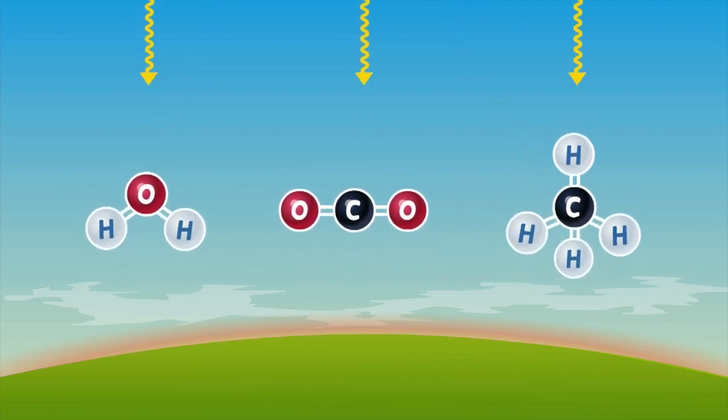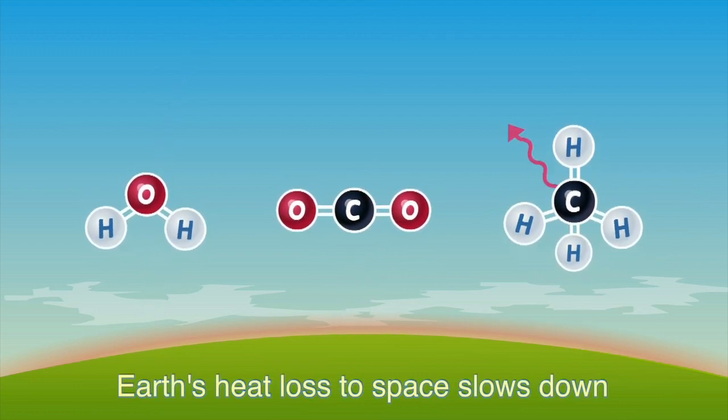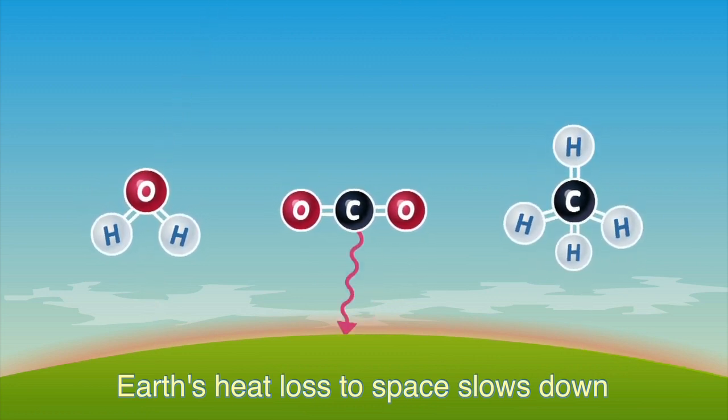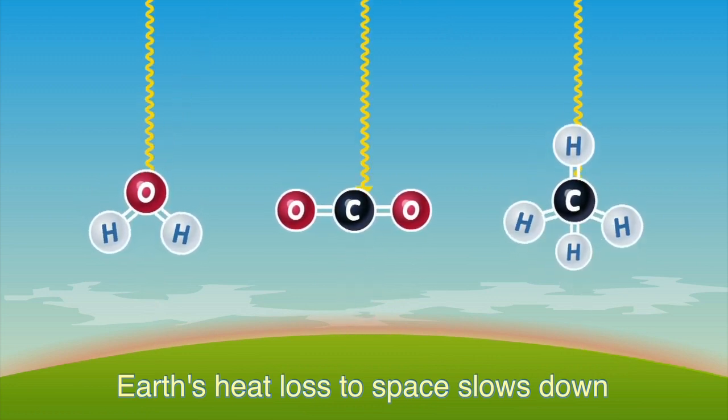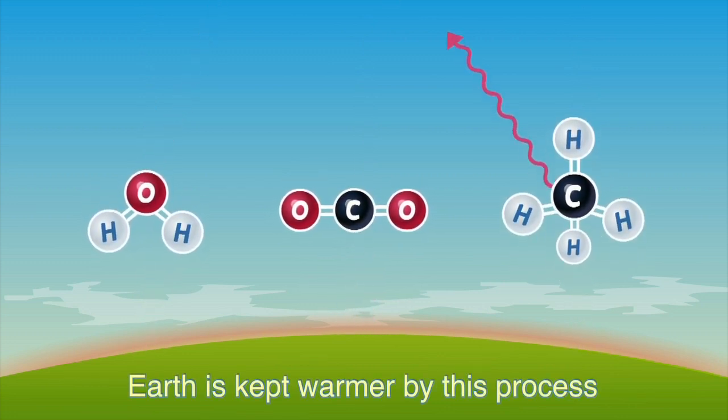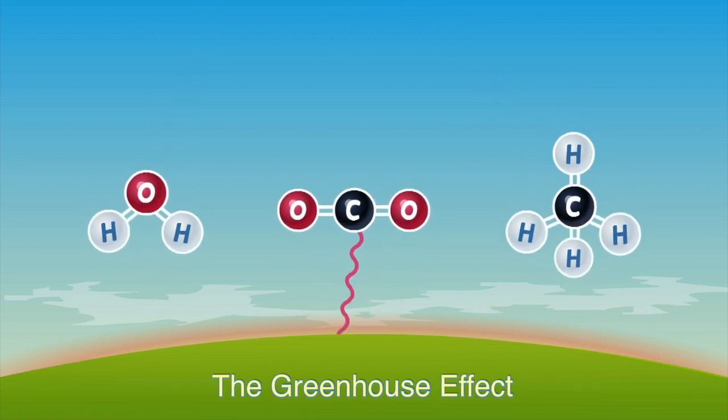The net effect of these processes is to slow down the loss of heat from the Earth. So heat that could travel out into space gets temporarily trapped in the Earth's lower atmosphere keeping the planet warmer than it would otherwise be. This is a natural system known as the greenhouse effect.